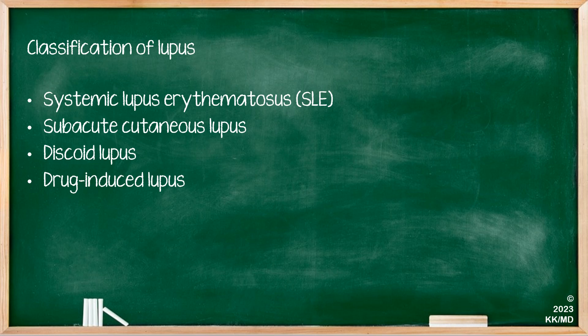To start with, we are going to go over the classification of lupus. Lupus is loosely used to describe what we know as SLE, which is systemic lupus erythematosus. However, there are three other subtypes: subacute cutaneous lupus, discoid lupus, and drug-induced lupus. For the purpose of this video, we are going to be covering SLE, which is the type that people commonly refer to as just lupus.